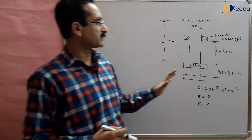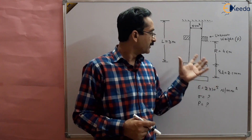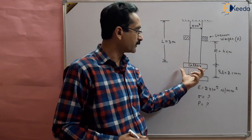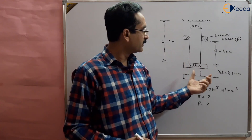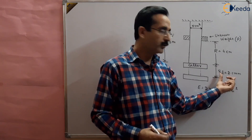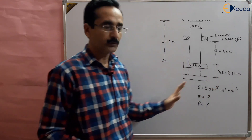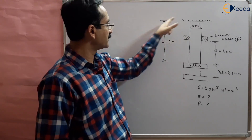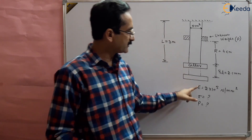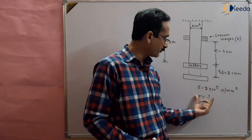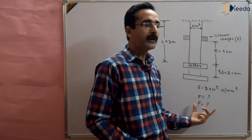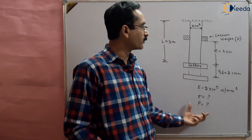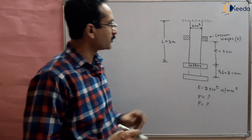This is a question of impact loading, where a weight falls through a height of 4 cm on a collar, and after falling there is some deformation — an elongation in the bar of 2.1 mm. The cross-section area of the bar is 5 cm², the total length of the bar is 3 meters, and the modulus of elasticity is 2 × 10⁵ N/mm². We have to find the instantaneous stress developed in the material and the unknown weight that falls on the collar.